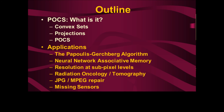Then we'll talk about neural network-associated memory. We'll talk about resolution at sub-pixel levels — how you can take a really bad camera, and if you take enough pictures with it, you can get a very good high-resolution image, believe it or not.